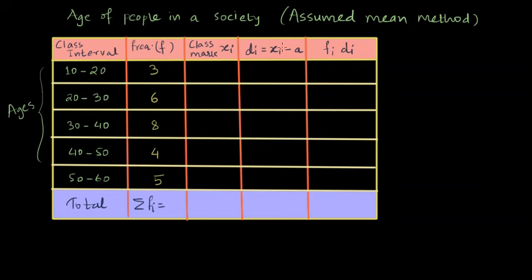Now our objective here is to find the mean age in the society given to us. We know different methods exist to find the mean. We can simply find the class mark for each. Class mark is the midpoint of the class intervals.